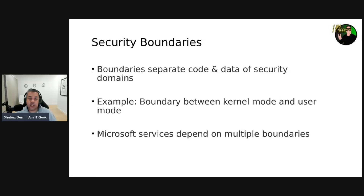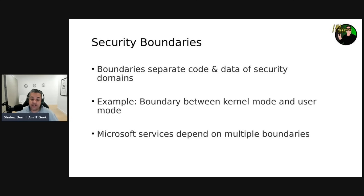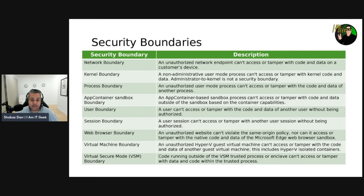Let's talk about security boundaries. Security boundaries separate the code and data of security domains with different levels of trust - for example, there's usually a security boundary between kernel mode and user mode. Most Microsoft software and services depend on multiple security boundaries to isolate devices, networks, virtual machines, and applications. Looking at the table of Windows security boundaries: the network boundary means an unauthorized network endpoint cannot access or tamper with code or data on a customer's device. The kernel boundary means a non-administrative user mode process can't access or tamper with kernel mode and data.